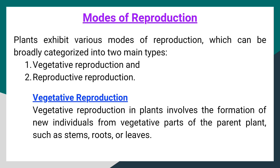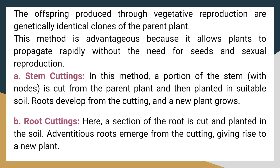Modes of reproduction. Plants exhibit various modes of reproduction, which can be broadly categorized into two main types: vegetative reproduction and reproductive reproduction. Vegetative reproduction in plants involves the formation of new individuals from vegetative parts of the parent plant, such as stems, roots, or leaves. The offspring produced through vegetative reproduction are genetically identical clones of the parent plant. This method is advantageous because it allows plants to propagate rapidly without the need for seeds and sexual reproduction.